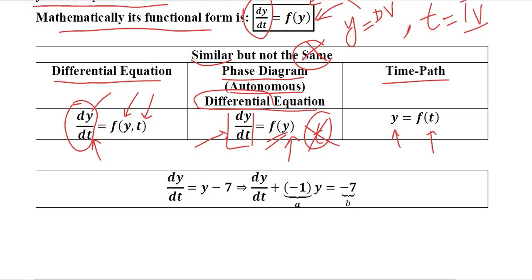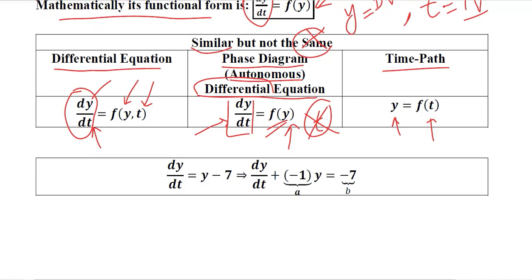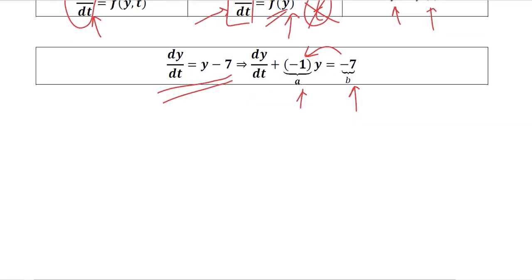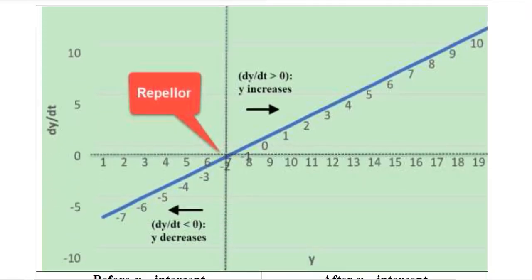After understanding the background of the phase diagram — that is, the autonomous differential equation — let us take a numerical example. We can rearrange it and write it so that y is on the left-hand side. When we do so, its coefficient will become minus one, which is the value of a, and the value of b on the right-hand side is minus seven. On the phase diagram, the x-axis has the dependent variable y, and the y-axis has dy/dt, the rate of change of the dependent variable with respect to the independent variable.